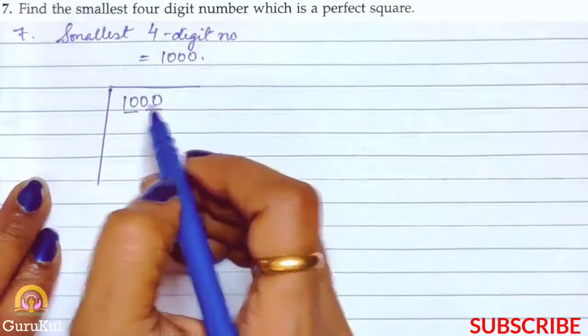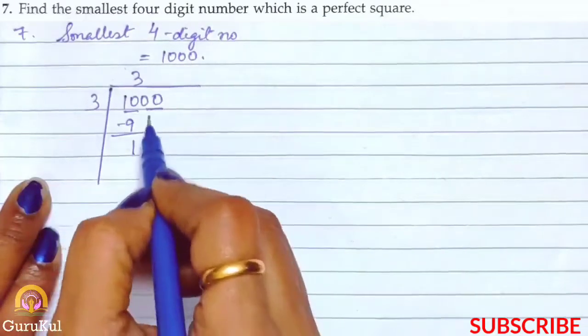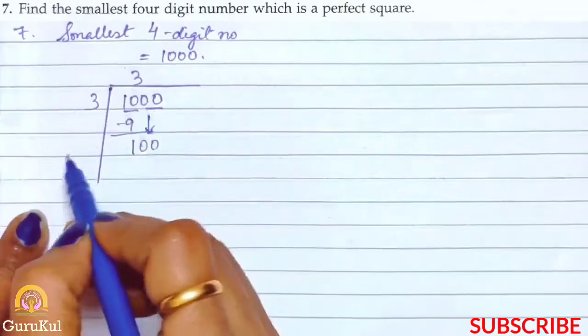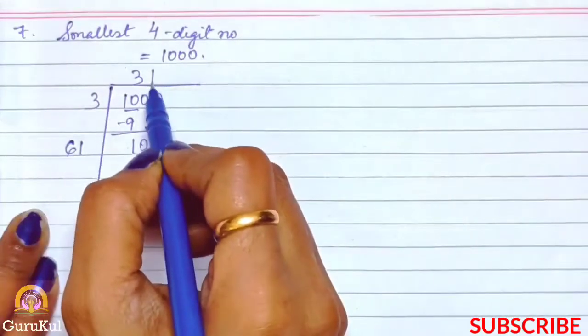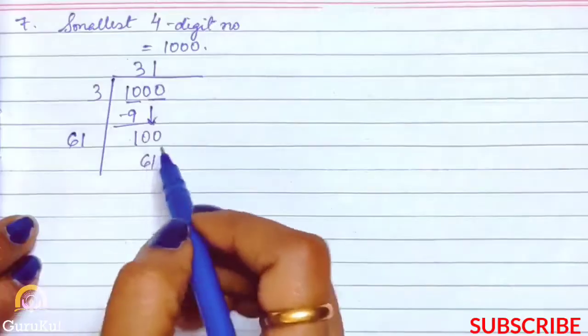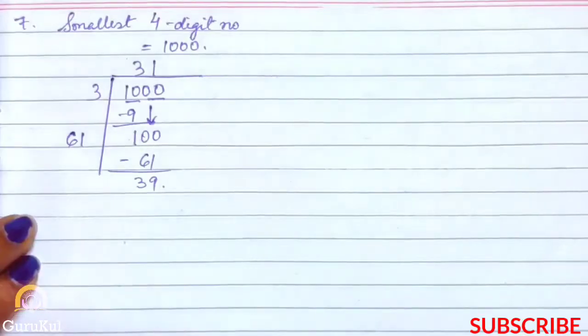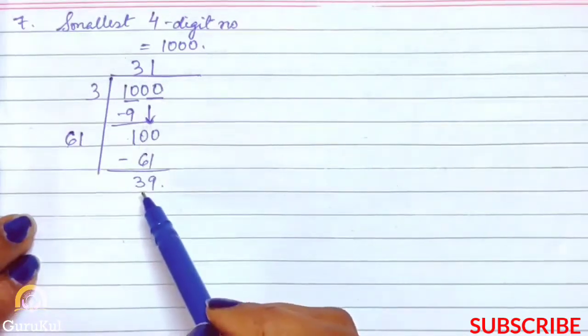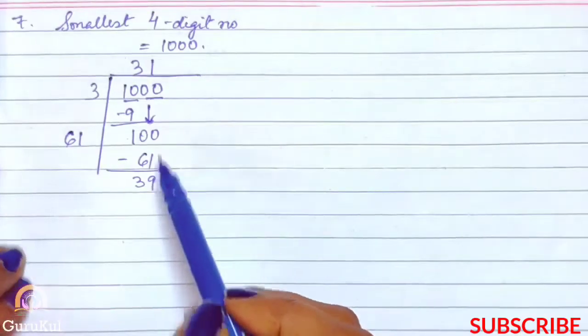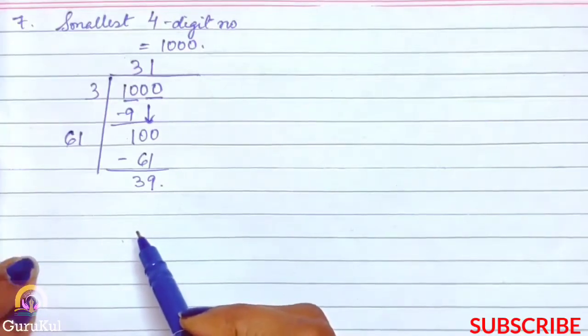We have paired them. So here 3 threes are 9, remainder 1. We will bring down double 0. Here 3 ka double 6. 61 so 61 into 1 it is 61, remainder 39. So now please give a little attention here. Find the smallest 4 digit number. So this 1000, it is not a perfect square because we are getting a remainder. If we will minus this remainder from 1000, then we will get 3 digit number as the answer.